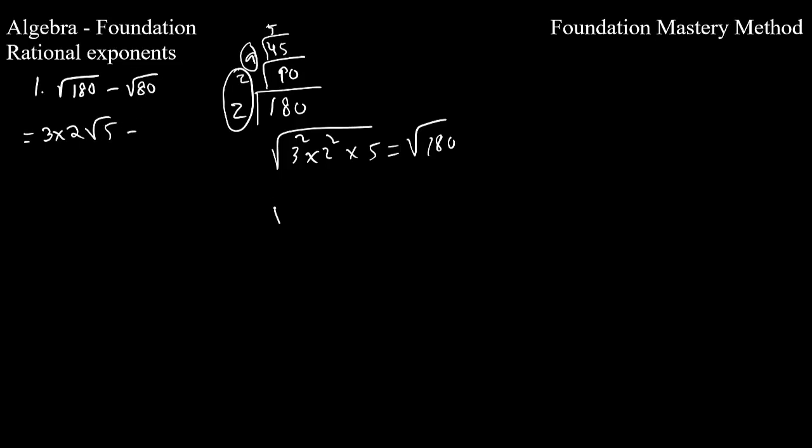Same way, square root of 80. If you already know, then you can go like this: 16 times 5. 16 is the squared number. It will come out as a 4, and 5 will stay, so you get 4 radical 5. This one is 6 radical 5 minus 4 radical 5, so you get 2 radical 5. That's the simplified one.